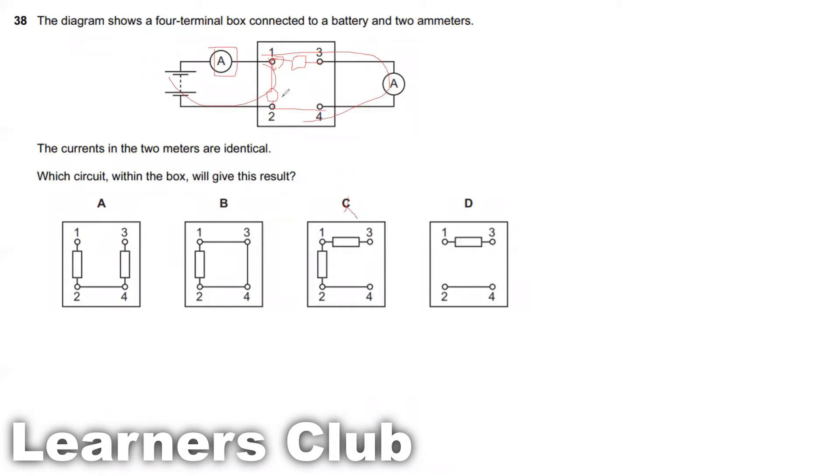Option D. The resistor is placed here and there is a connection here, which means the same current passes through this resistor, the same ammeter and returns back. So the same current passes through both the ammeter. As a result, option D is the answer.